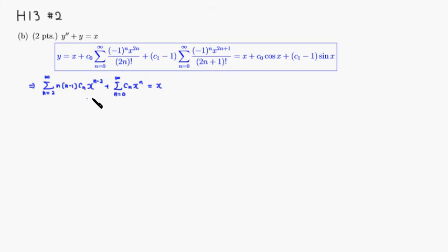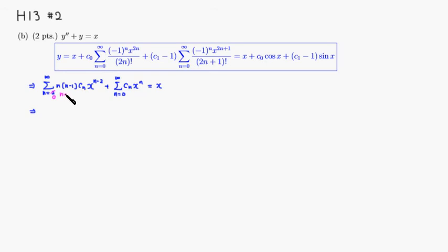The first thing we want to do is match the exponent — we want x to the n instead of x to the n minus 2. So we decrease the power by 2 and increase the indices by 2. This gives us a summation starting from 0 of n plus 2 times n plus 1 times cn plus 2 times x to the n.